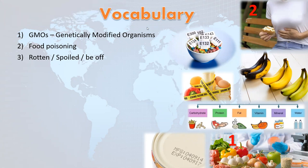Number three: rotten, spoiled, off. Max, you used the word before — what is the color of a rotten banana? Black. That's it. Now, if I say a banana is 'off,' a banana is 'spoiled,' or a banana is 'rotten' — are they the same? No. What's the difference?